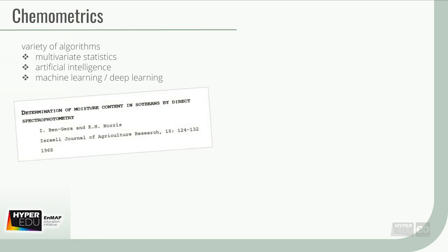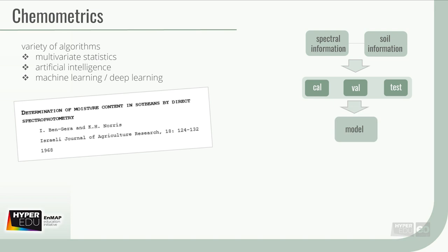First developed in food science in the 1960s, these methods divide the available spectral and soil chemical information in calibration, validation, and test datasets. From these datasets, models are created that eventually allow for the prediction of variables from new data.